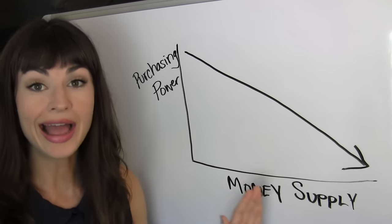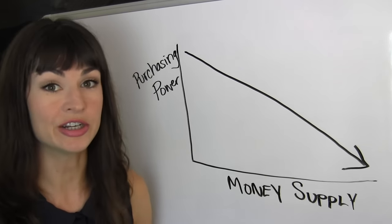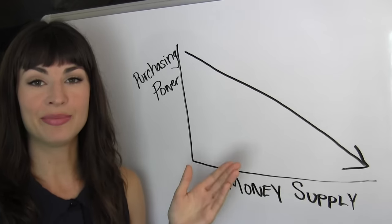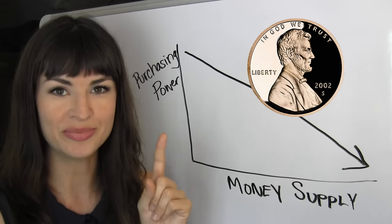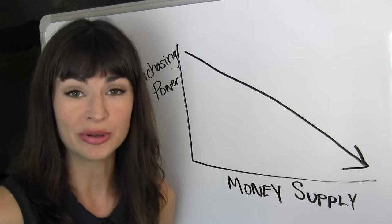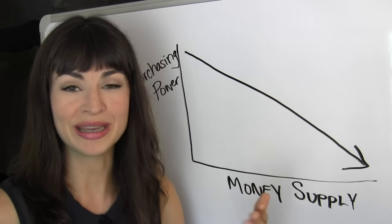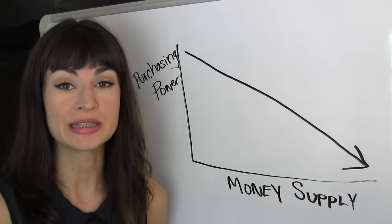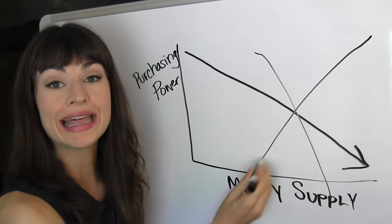As the supply of money increases, the purchasing power — what goods and services each individual unit of that money will get you — goes down. As an example, in the United States there used to be something called penny candy, because one penny would buy you a piece of candy. Now, a lot of people simply throw their pennies away in the trash can because it will no longer buy them anything. If any new monetary system is to be considered worthy of your attention, it's got to not be like that.